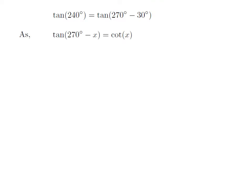As we know, the trigonometry identity tangent of 270 degrees minus x is equal to cotangent of x.